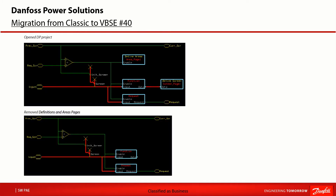After clarifying the principles and the goal of the migration we can start doing process changes. I open the DP project and the first change takes place inside guide drawing, related to the classic and vector-based screen editor difference, to instantiate a screen definition. Inside the DP project all definitions and area pages need to be removed from the code. These components relate to the classic screen. After this, the modified project can be compiled and closed.